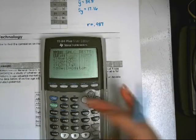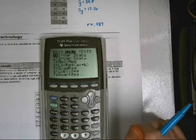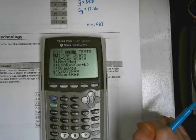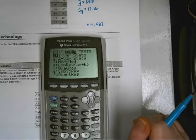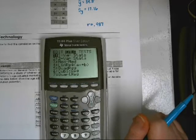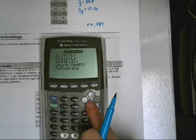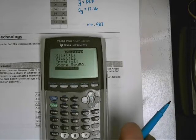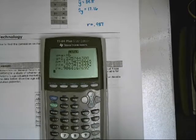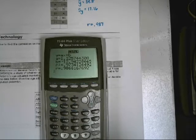Okay, so now we're going to hit stat, arrow over to calculations. Now, what kind of correlation are we trying to find? Linear. Linear. So we're going to do a linear regression, just like we used to do in algebra, number four. And arrow down. Make sure you've got list one and list two in your x, y list. And arrow down to calculate. And that bottom number is your R value.